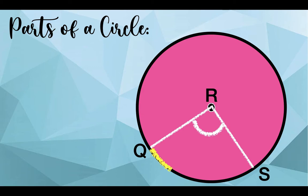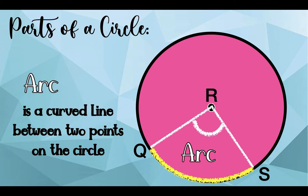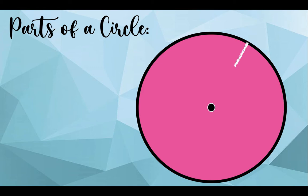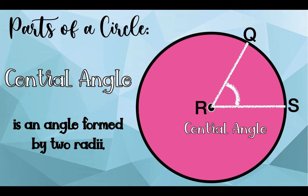The arc between point Q and S is what we call arc — it is a curved line between two points on the circle. While this one is what we call the central angle. Angle QRS is the central angle; it is an angle formed by two radii.